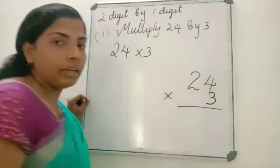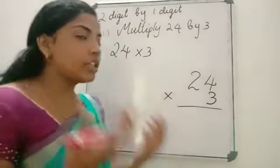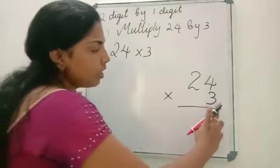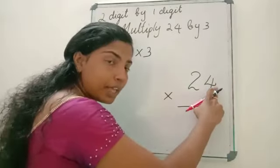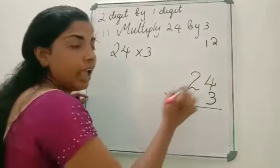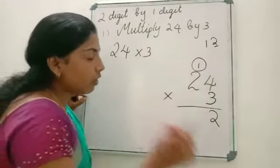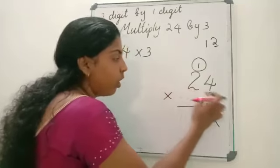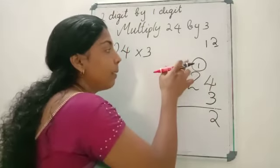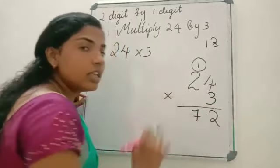Now we are going to multiply. We have to multiply 3 with both 4 and 2. Just as in addition and subtraction, we start from the 1's place. First, multiply 3 by the number in the 1's place — that is 3 into 4, which is 12. Write 2 in the 1's place and give 1 as carryover to the next place. Next, multiply 3 by the number in the 10's place — 3 into 2 is 6, plus carryover 1 equals 7. So the answer is 72. 24 into 3 is 72.